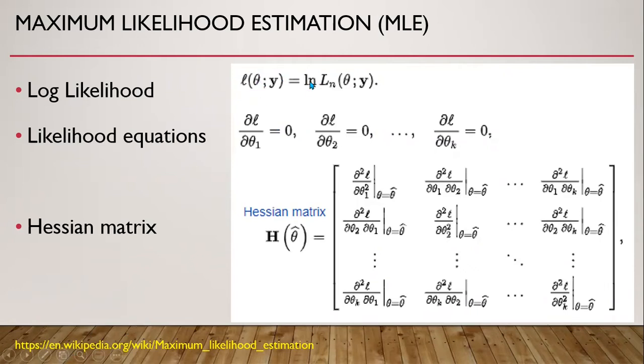This is the natural logarithm of the likelihood function. The partial derivatives of log-likelihood with respect to each parameter, when equated to zero, are known as likelihood equations. We can solve these equations to get the parameters. However, it is not always feasible. We may also require the Hessian matrix to calculate the parameter values.